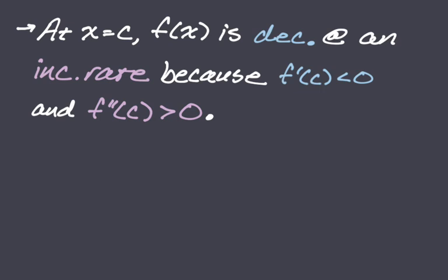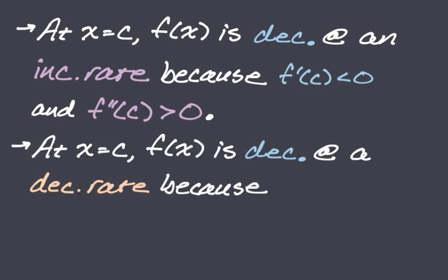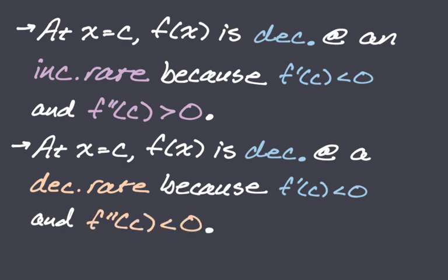There will be context, but this is the skeleton of the answer. For the final possibility: at x equals c, f of x is decreasing at a decreasing rate. If our function is decreasing, f prime must be negative. At a decreasing rate tells us that f prime is decreasing, which means f double prime is less than zero. That's the terminology and how we get these things.